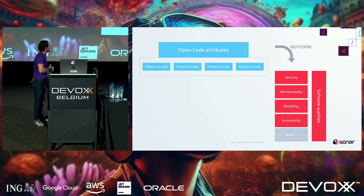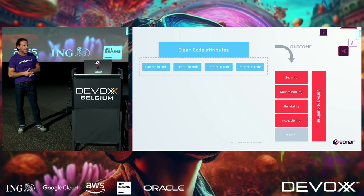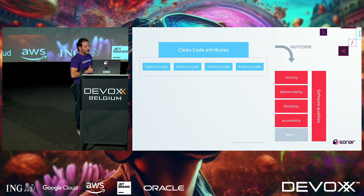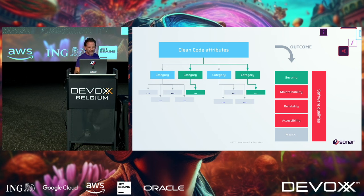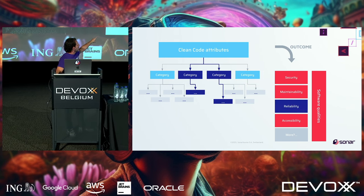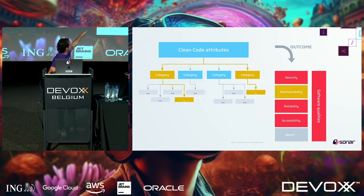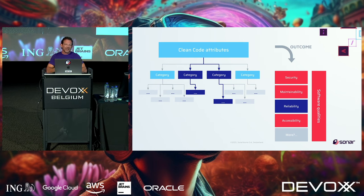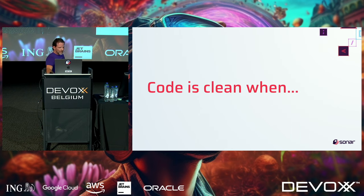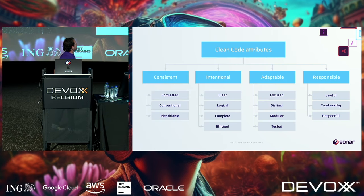It dawned on us that your attributes are what produce the outcome. As you write good code and talk about clean attributes, these are the things that actually produce secure, maintainable, reliable software. It's still hierarchical — security has attributes that flow up into a category, and an attribute can be both a reliability issue and a security issue, multi-directionally. So code is clean when you have clear, consistent, intentional, adaptable, and responsible code.